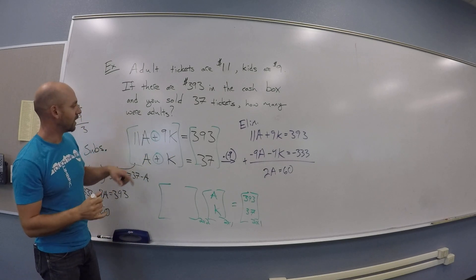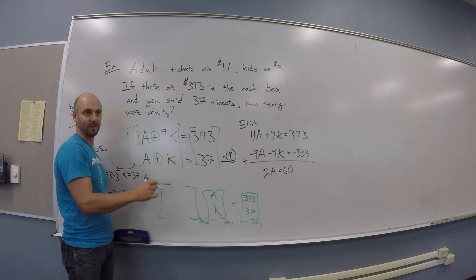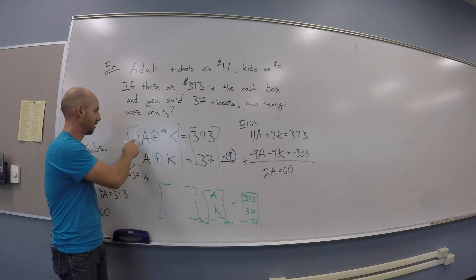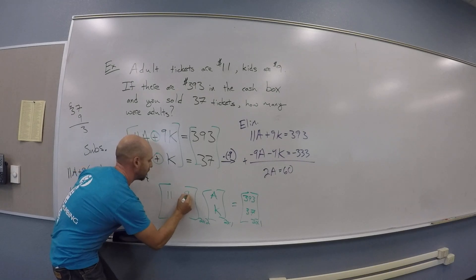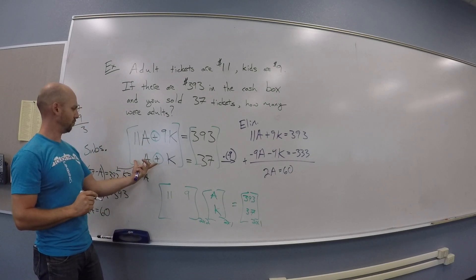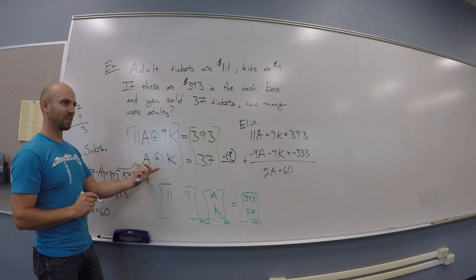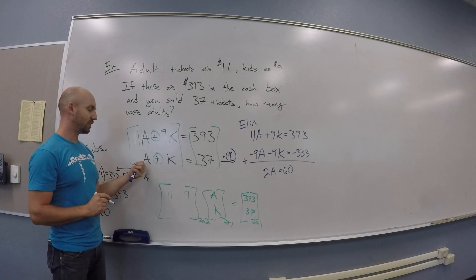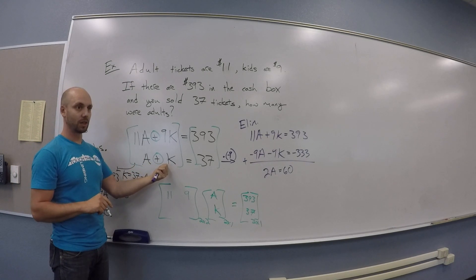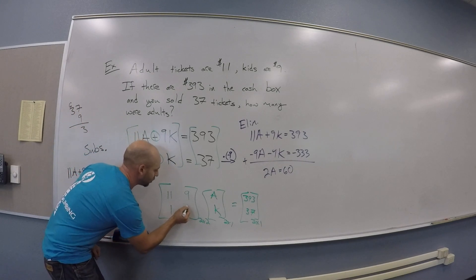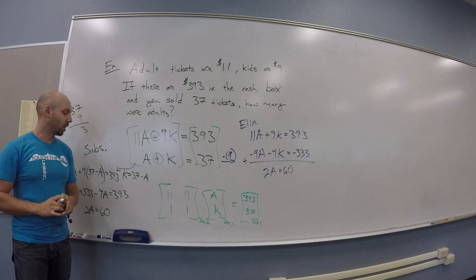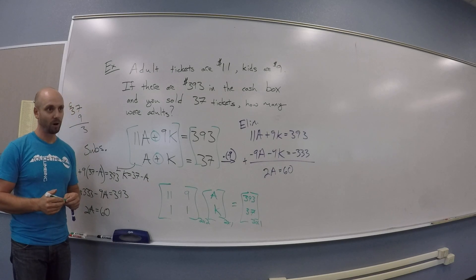So what was I dropping it on to? 11 and 9. How many A's do you have here? 1. How many K's? 1. So that's dropping onto the matrix row 1, 1. So the coefficient matrix is [11, 9] on the top row and [1, 1] on the bottom row.